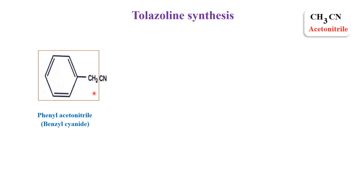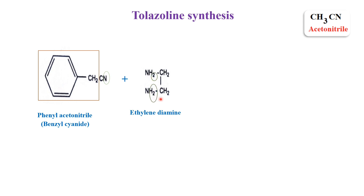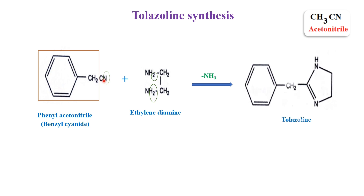So, we have taken phenylacetonitrile and it is treated with ethylenediamine — CH₂NH₂·CH₂NH₂. By the addition of these two, one nitrogen with one hydrogen and two hydrogens would be removed as ammonia. The remaining part — NHCH₂ and NCH₂ — would be added to the carbon, forming a fused ring, and we are getting tolazoline.